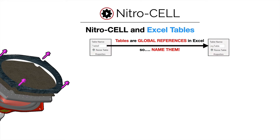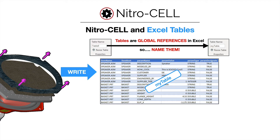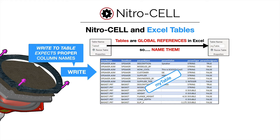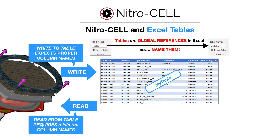A couple of things about tables you need to know. They're global references in Excel, so it's very important to name them so they're easy to find, understand, and relate by either Excel functions or NitroCell functions. When data is written from NitroCell out to Excel, it expects a certain format based on the function you're using — parameter column names are going to be different than note column names or file listing column names. Those same references can also be used to send data back, and the reading of data from a table requires minimum command-specific column names.